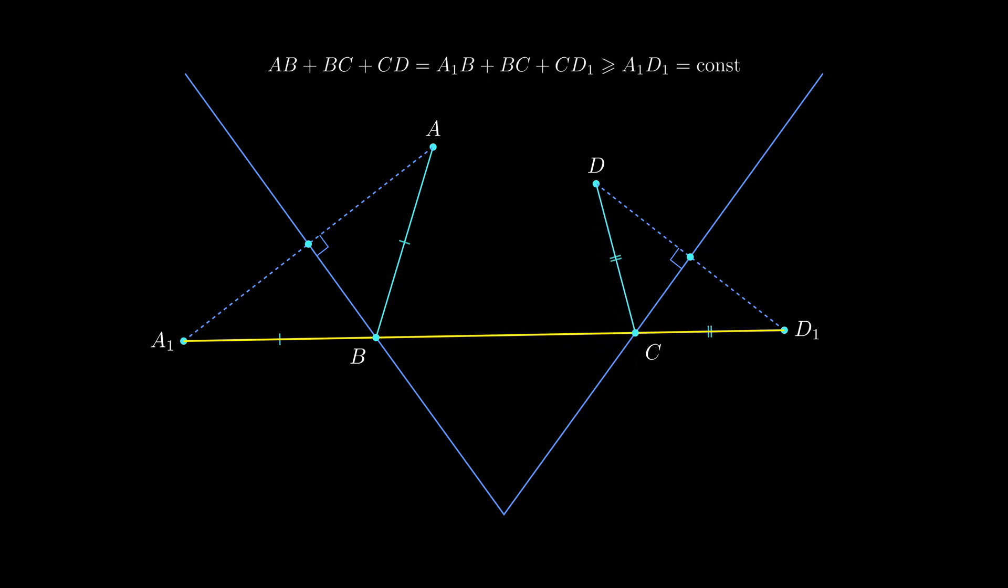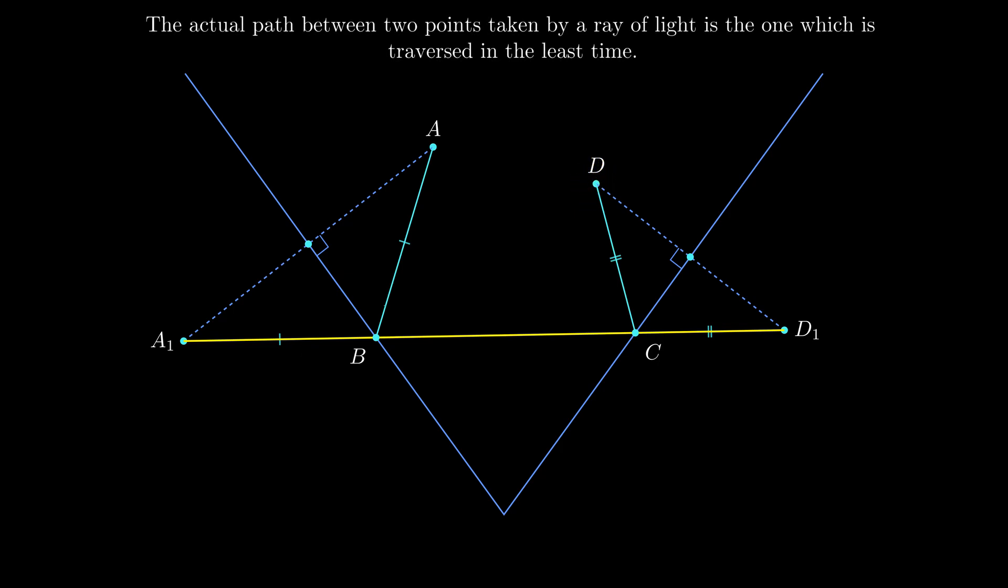But what do we need physics for? Think about the ray of light that starts from the fixed point, then reflects off every side of the angle, and finally ends up at another point. According to Fermat's principle, light follows the shortest optical path.